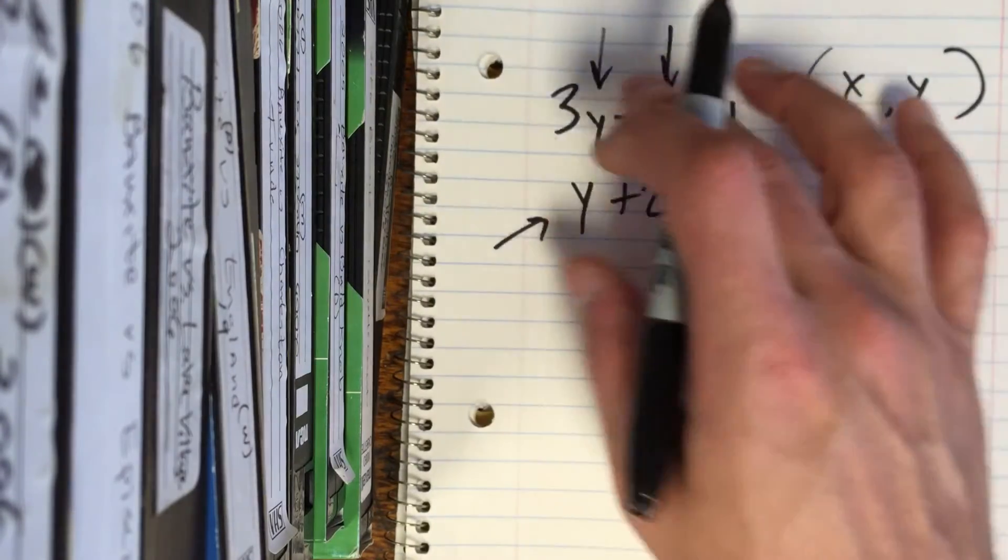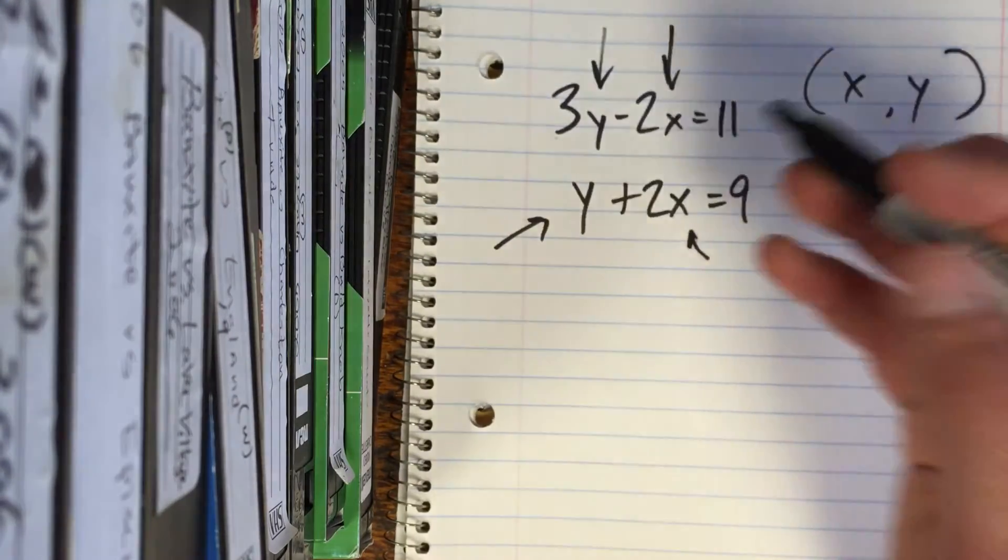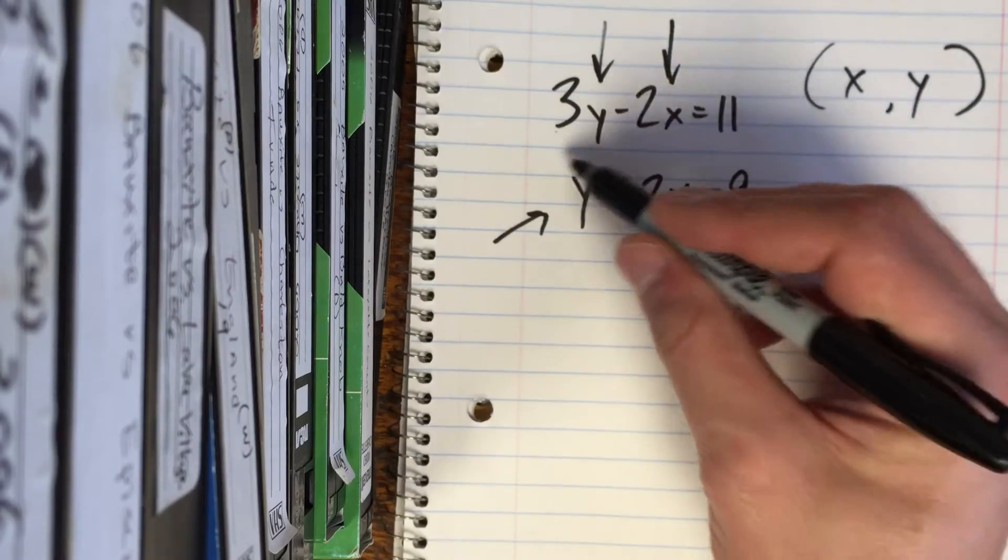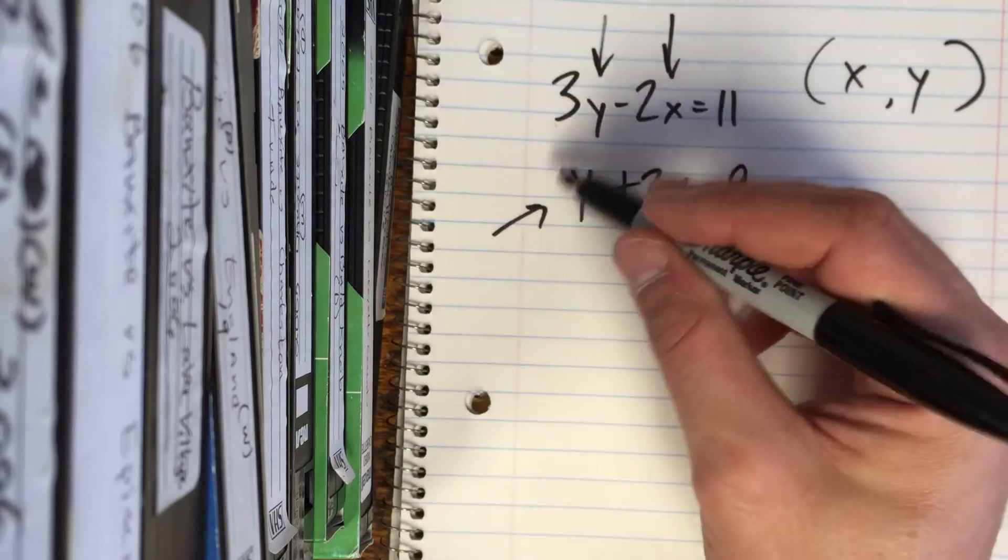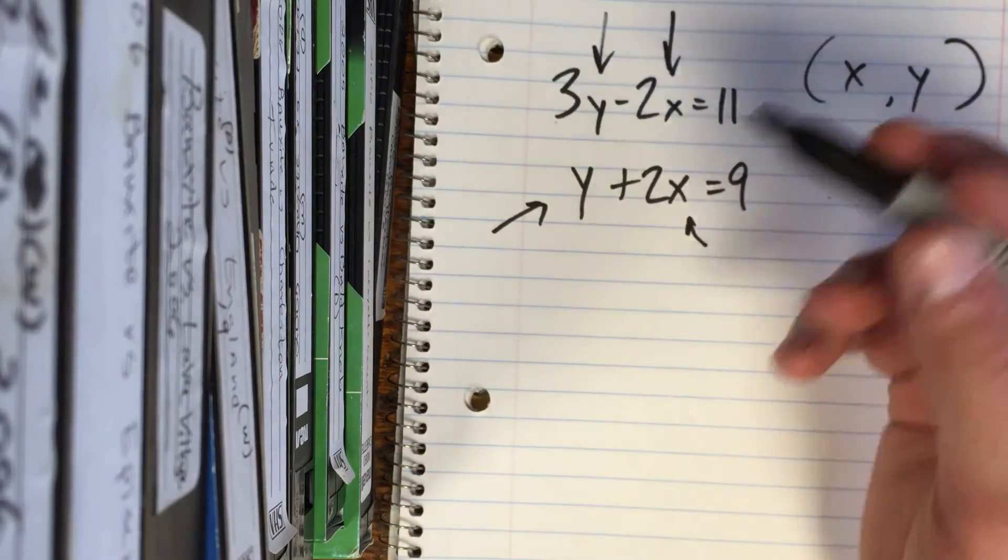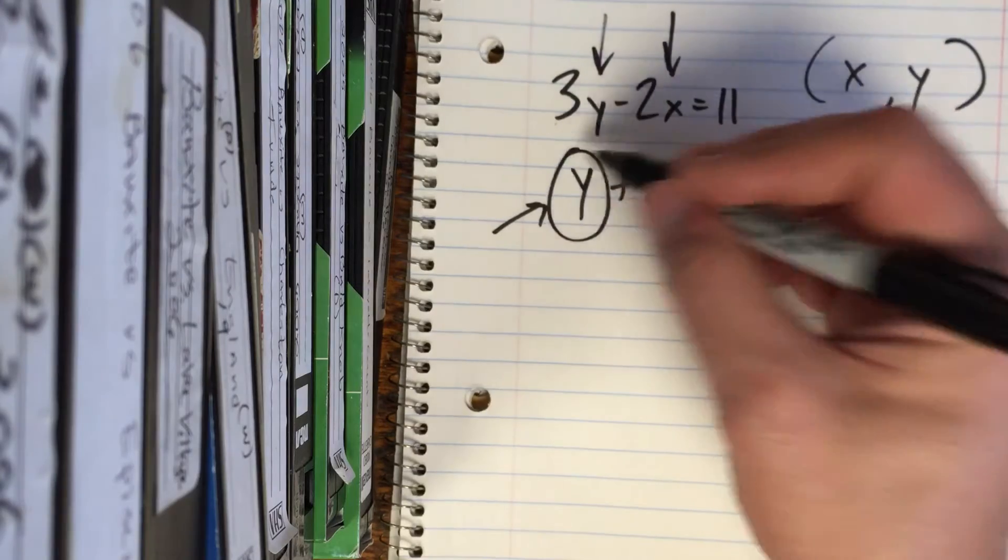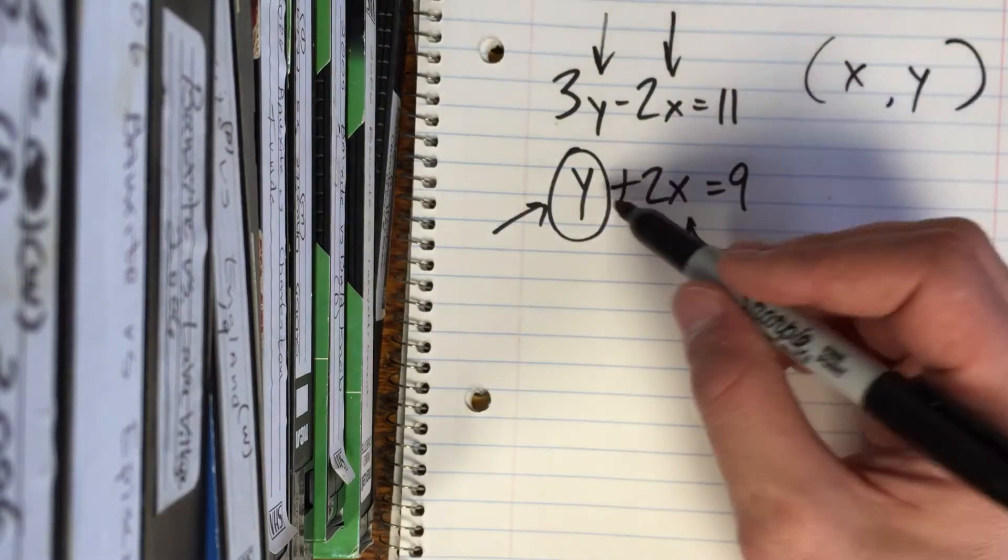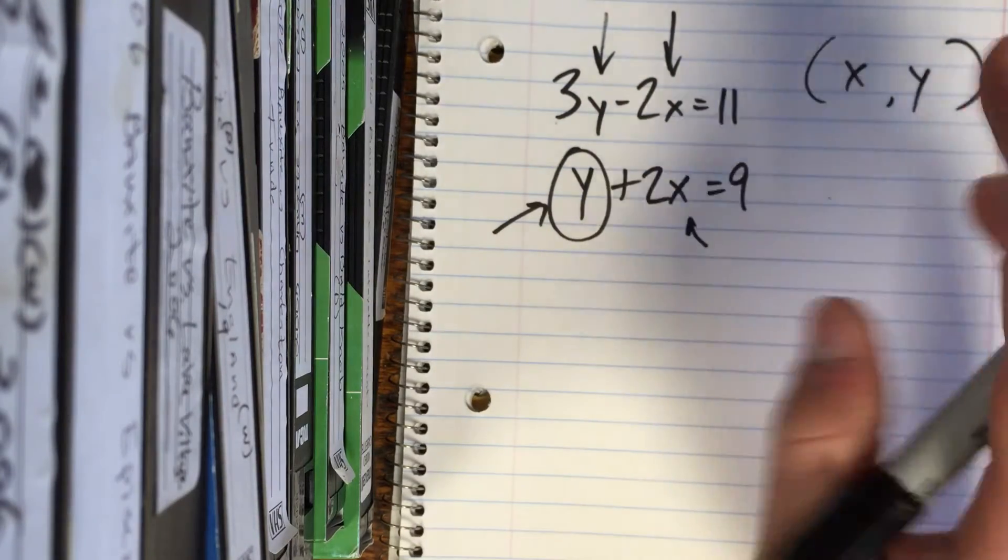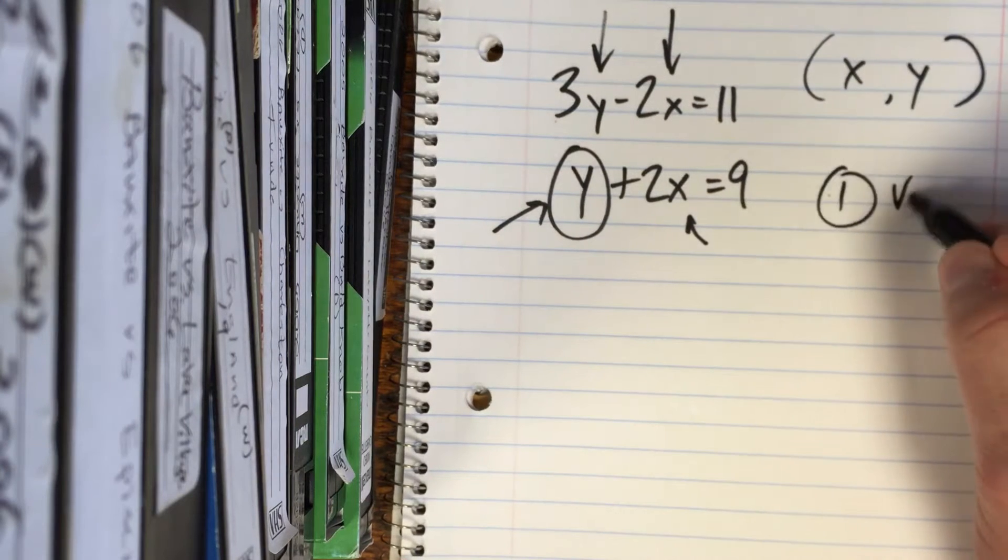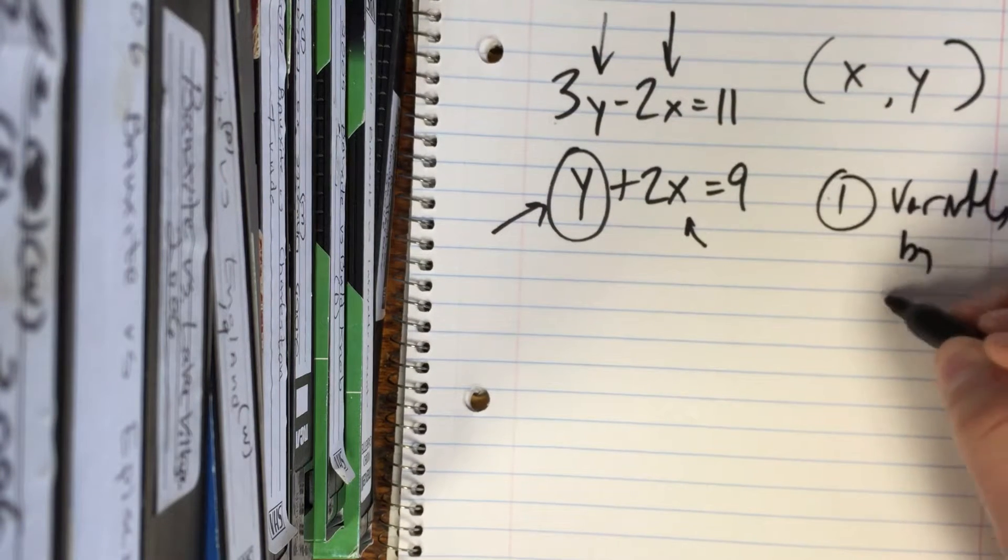First thing you do is look for out of your x's and y's, doesn't matter which one you start with. I would recommend finding the one that doesn't have anything in front of it. Well, we know it's a one, but there's nothing in front of it. That makes it a little bit easier. So this would be our little fellow right here. So my goal is to get that y by itself. So step one, variable by itself.